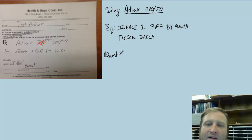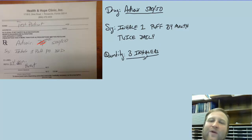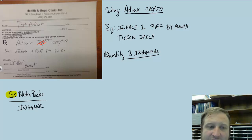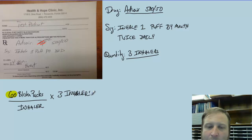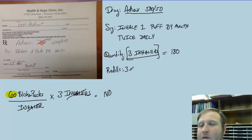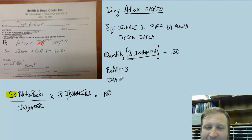The quantity will be a value of three inhalers. Every inhaler has 60 blister packs per inhaler. So the quantity is 60 blister packs per inhaler times three inhalers, which gives a value of 180. That's what we're going to put in for the quantity. The refills will be three, and the days will be a value of 90.